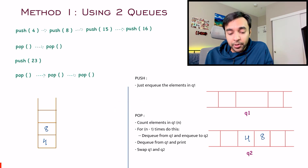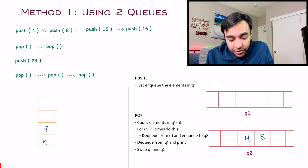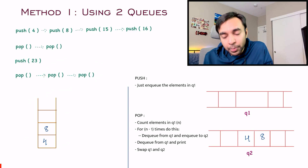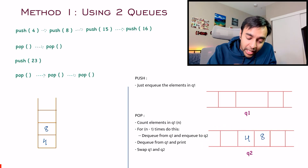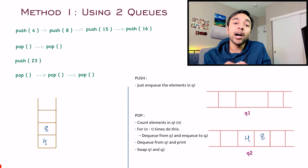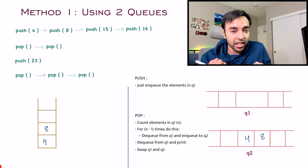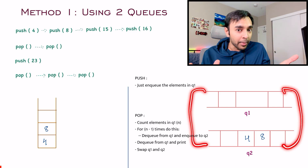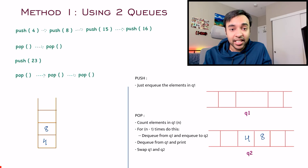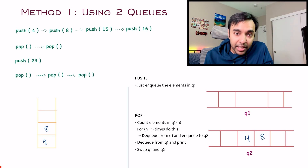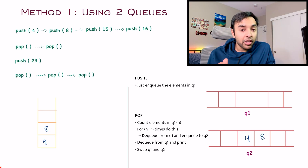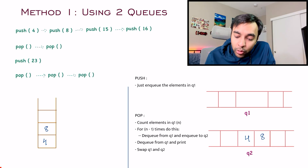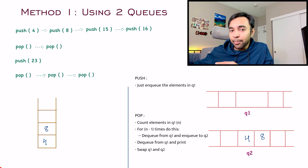Similarly, if you perform the pop operation two more times, your stack will be completely empty and your queue will also be empty. So if someone asks how you implement the isEmpty function, just look at both your queues — if both of them are empty, you can safely say your stack data structure is empty. This is one approach using two queues: one main queue and one helper queue.